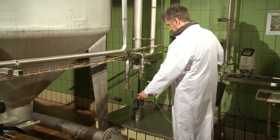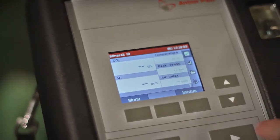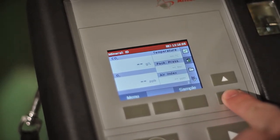Anton Paar's CO2 and O2 meters are supplied factory adjusted and can be used immediately. You can start a measurement after a few short steps only.